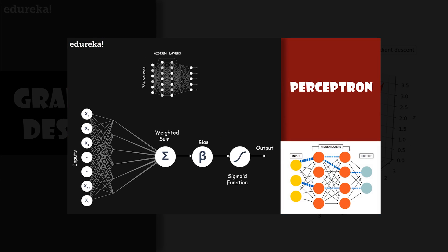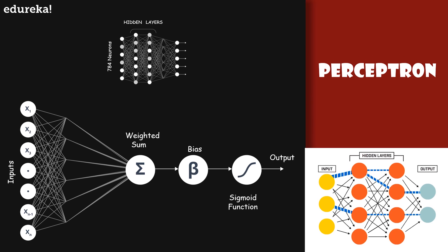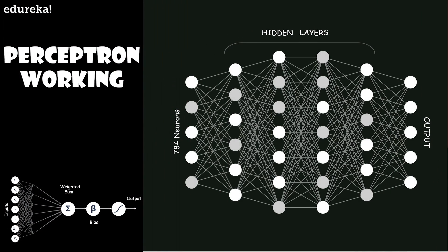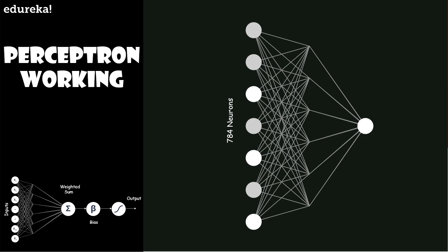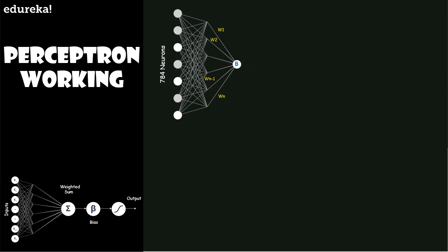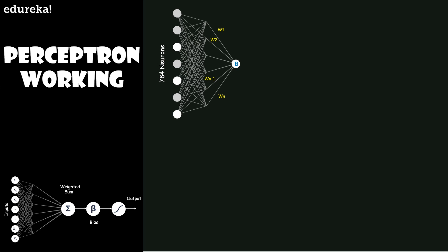We also discussed how a perceptron works and behaves like a function. Obviously the perceptron isn't a complete model of human decision making, but what the example illustrates is how a perceptron can weigh up different kinds of evidence in order to make decisions. It should seem plausible that a complex network of perceptrons could make quite subtle decisions. In this network, the first column of perceptrons is making very simple decisions by weighing the input evidence.